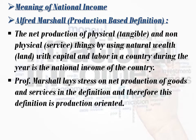Now we will study the meaning of national income according to economists. First, Alfred Marshall gives a production-based definition. His definition states: the net production of physical tangible and non-physical intangible service things, by using national wealth along with capital and labor in a country during the year, is the national income of the country. Our net production here includes both physical goods — tangible goods which we can see and touch — and non-physical goods which we cannot see or touch but receive in the form of services.